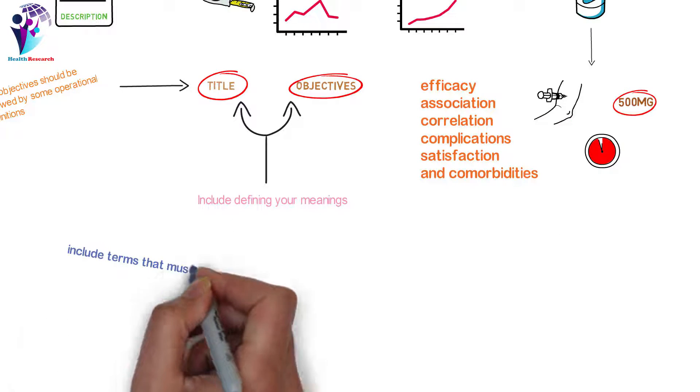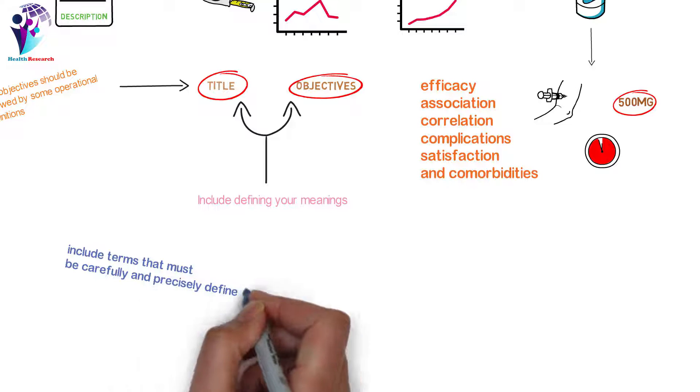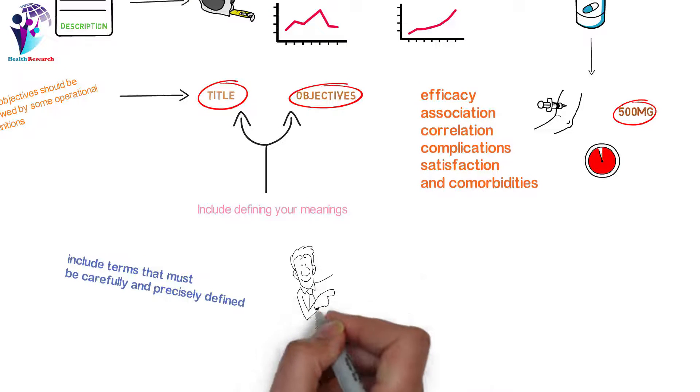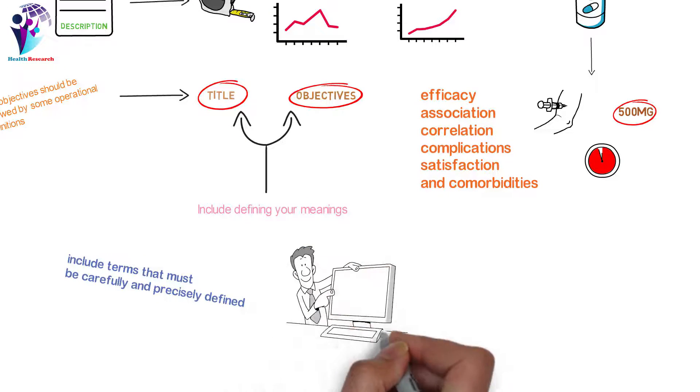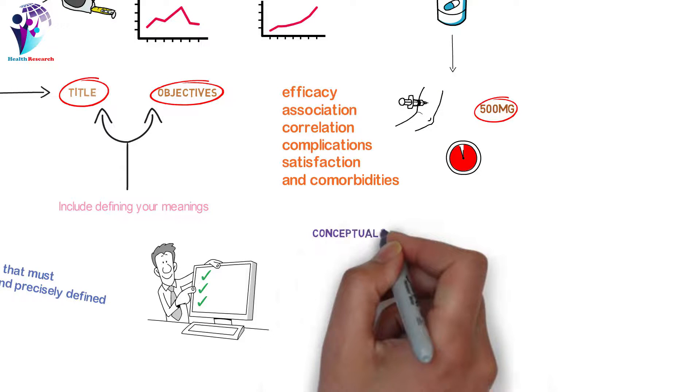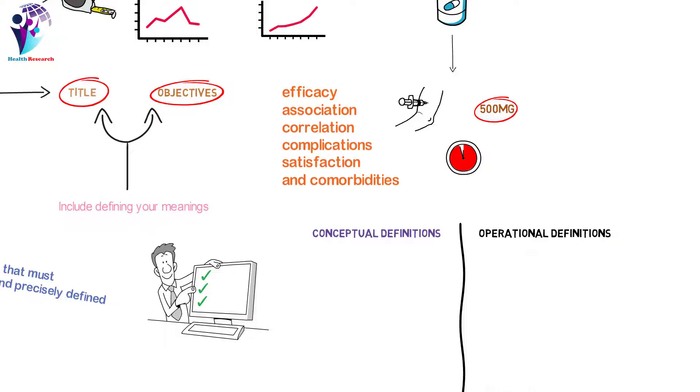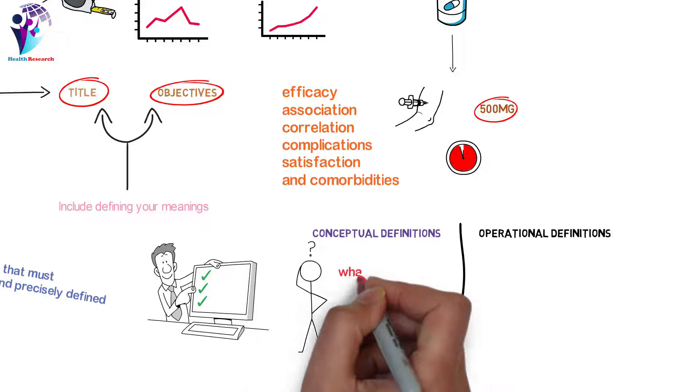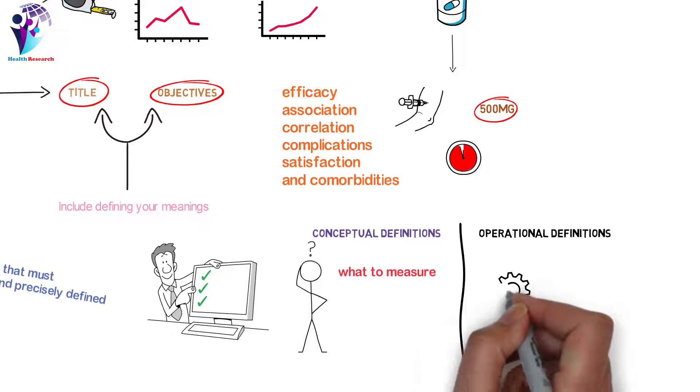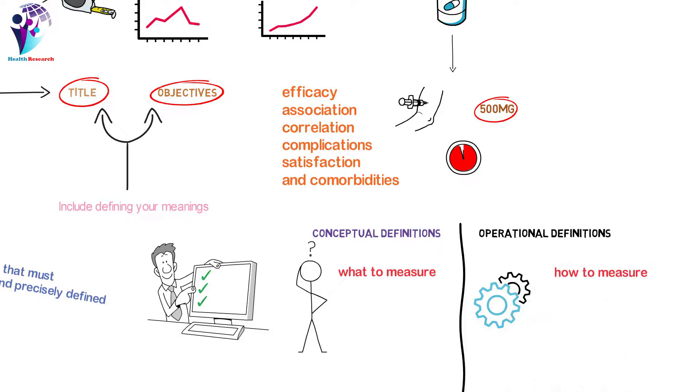Research studies usually include terms that must be carefully and precisely defined, so that others know exactly what has been done and there are no ambiguities. Two types of definitions can be given. A conceptual definition explains what to measure or observe, and an operational definition defines exactly how to measure or observe it.